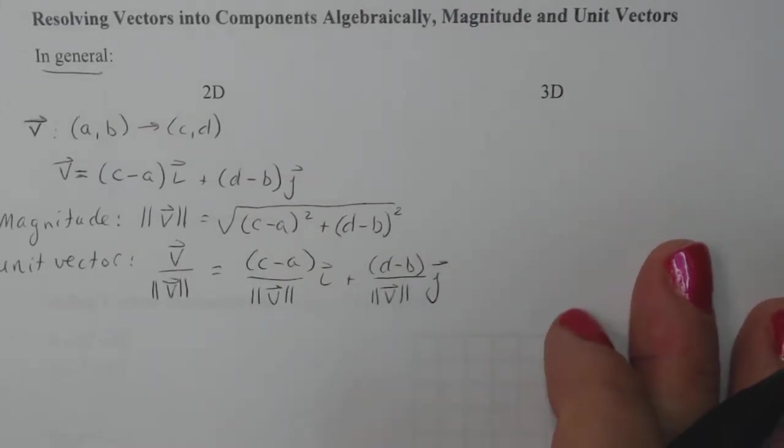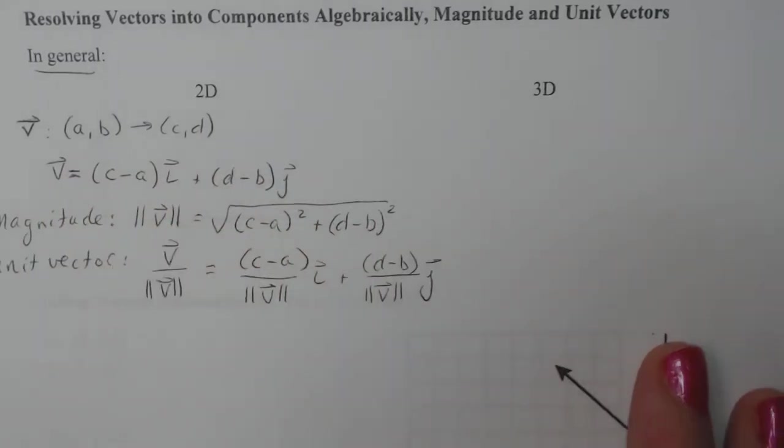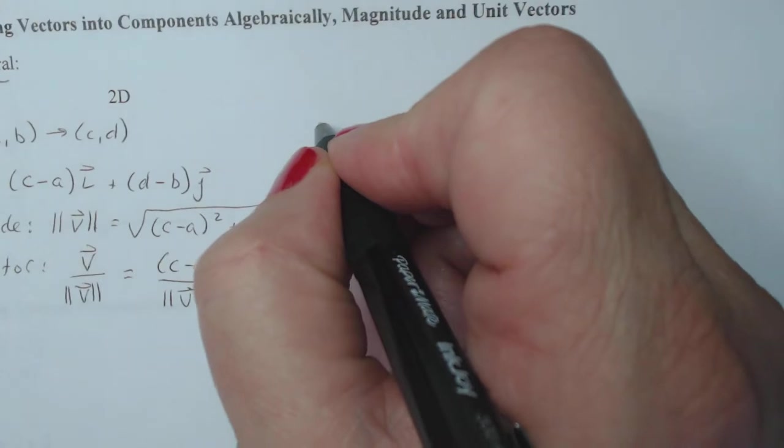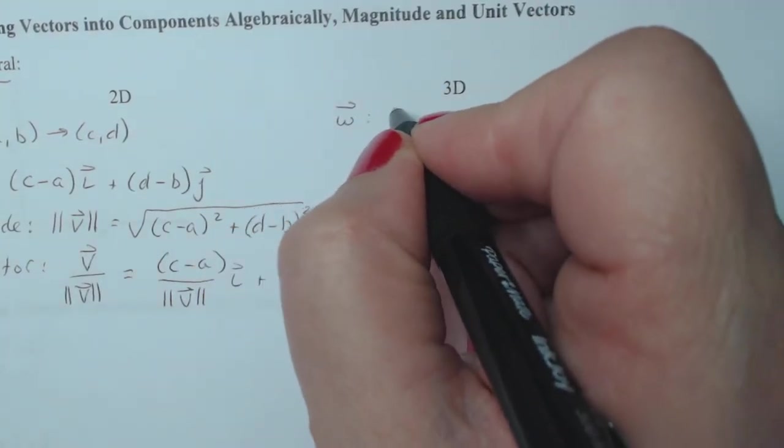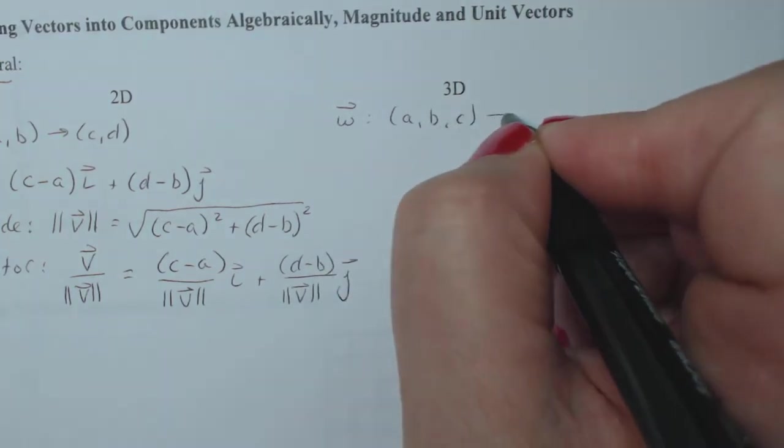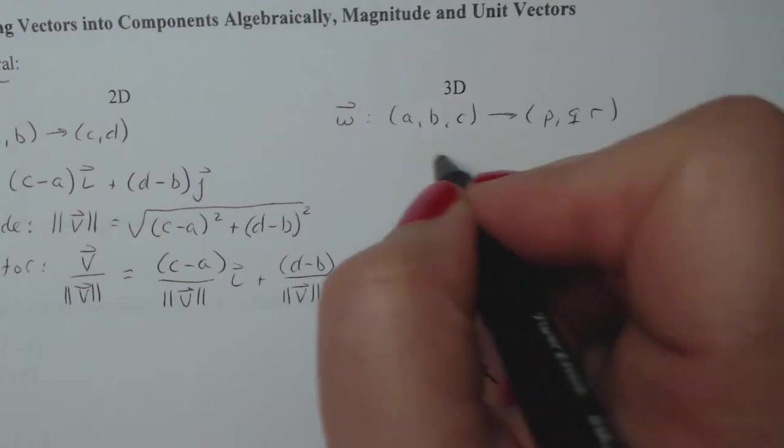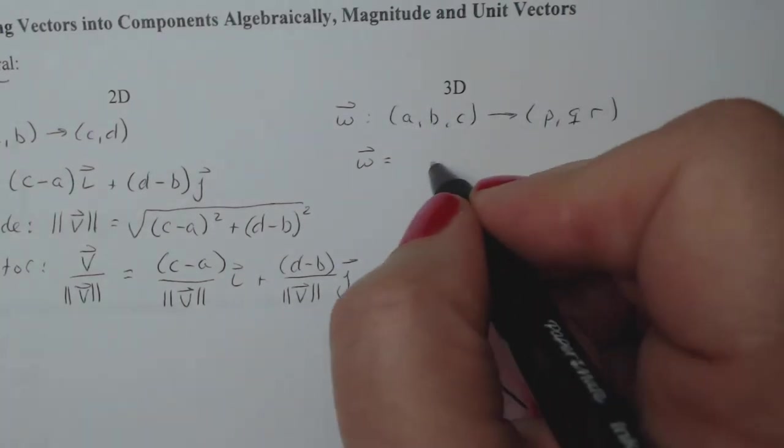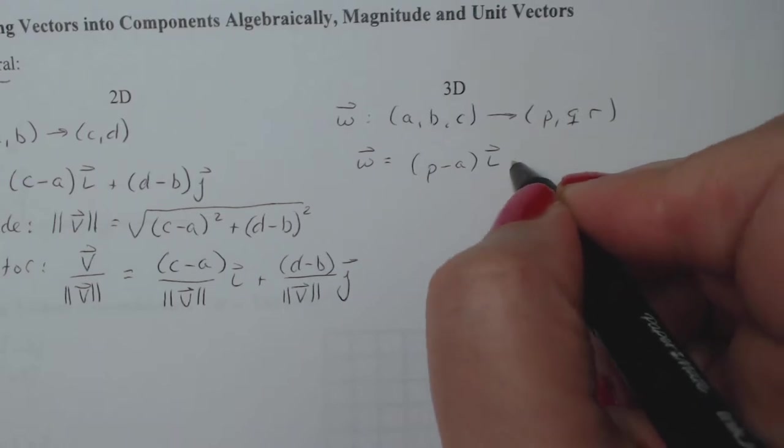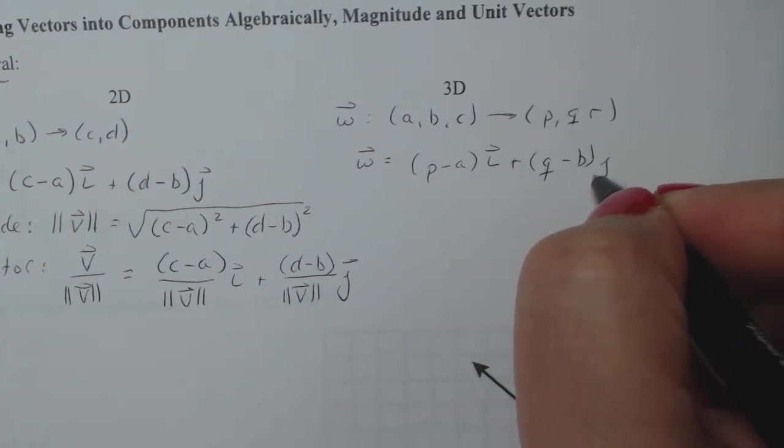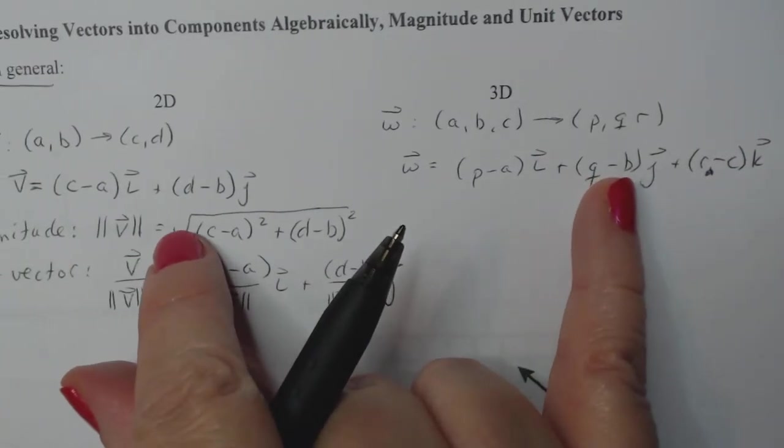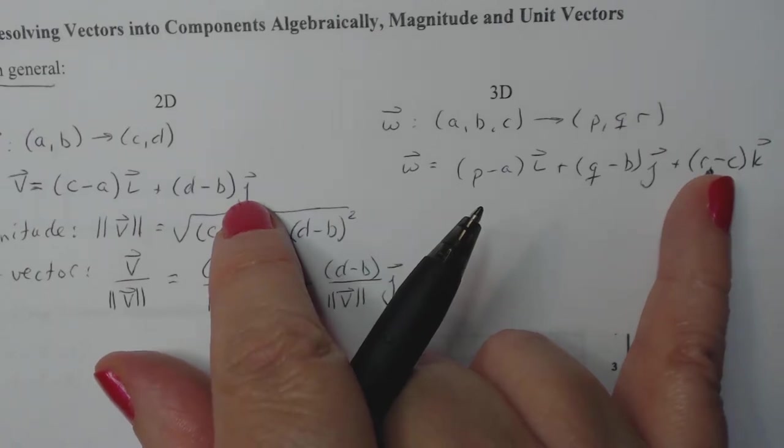Now I'm going to extend it into 3D. Again, use the same thing in 2D, extend it once more to include z. So let's move this over so I have some space here. So this one we're going to talk about vector W, and W is going to go from (a, b, c) to (p, q, r). So if I follow the same logic as I did for V, I'm going to take the two minus the from for each component. So (p - a)i + (q - b)j + (r - c)k. Same thing. Notice I just add one extra component on there for the third part of the ordered triple.